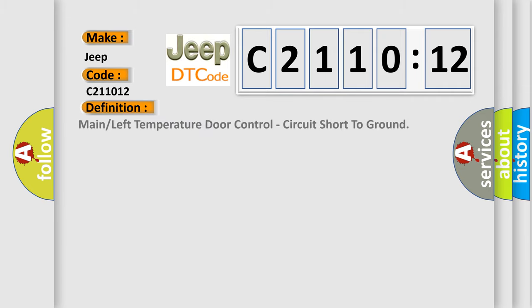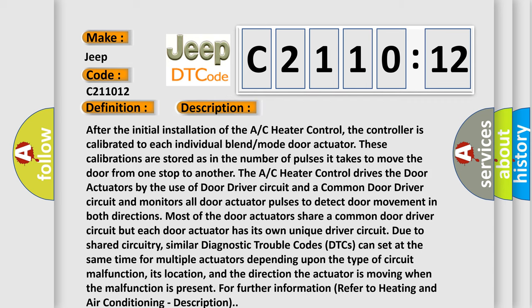The basic definition is main or left temperature door control circuit short to ground. And now this is a short description of this DTC code.